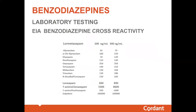The next slide shows the cross-reactivity of the benzodiazepines on the initial screening test, which is performed by enzyme immunoassay. Here at Cordant Forensic Solutions in Flagstaff, we calibrate our screening assay with lormetazepam. We have two cutoffs: 200 nanograms and 300 nanograms. What's shown here is the equivalent amounts of the various benzodiazepines — either parent drug or metabolite — required to get the same response as lormetazepam at either the 200 or 300 nanogram cutoffs, which are standard screening cutoffs for benzodiazepines.